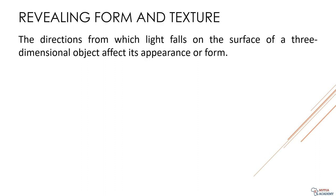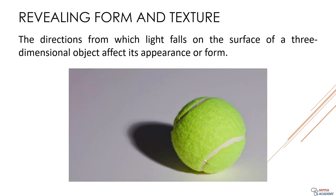When it comes to interior lighting design, achieving the perfect balance between form and texture is key to creating a space that's not only visually appealing but also functional. Form refers to the overall shape and structure of an object, while texture refers to the surface quality of the material. By simply changing the direction of your light source, you can either accentuate or downplay the form and texture of your objects. This technique, called modeling, can create stunning effects.